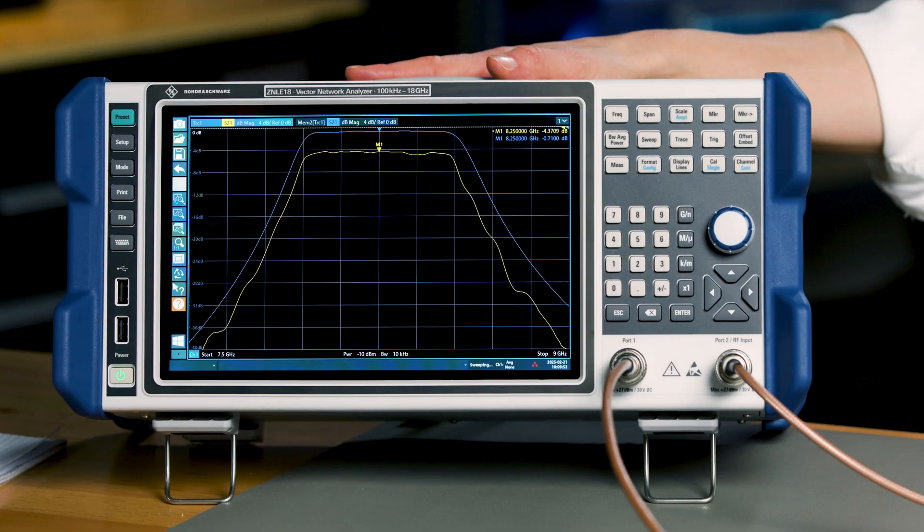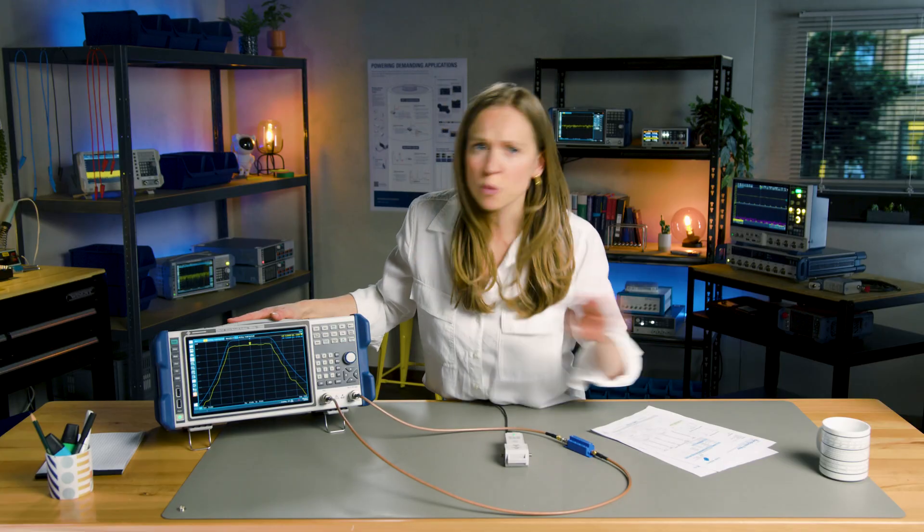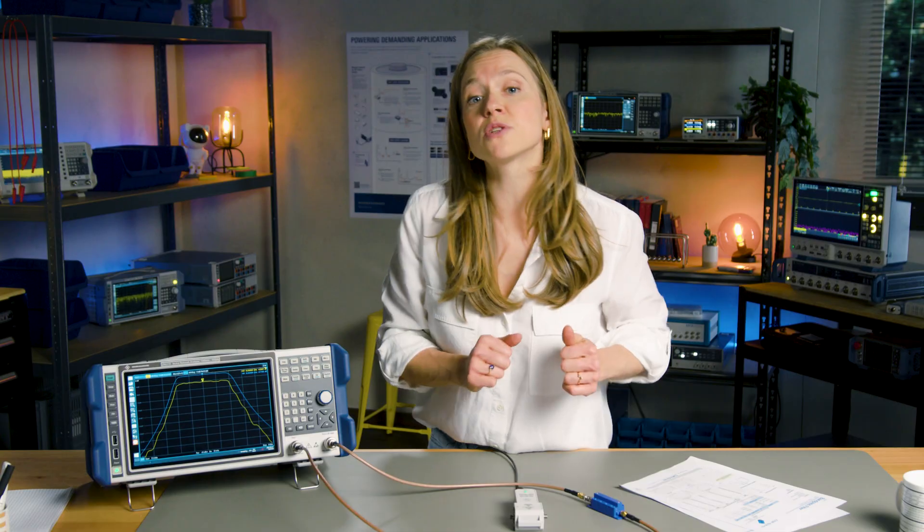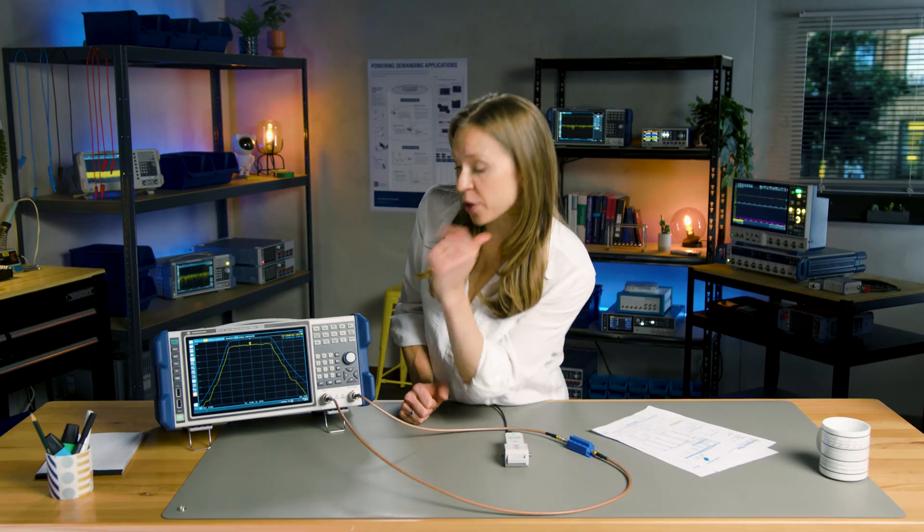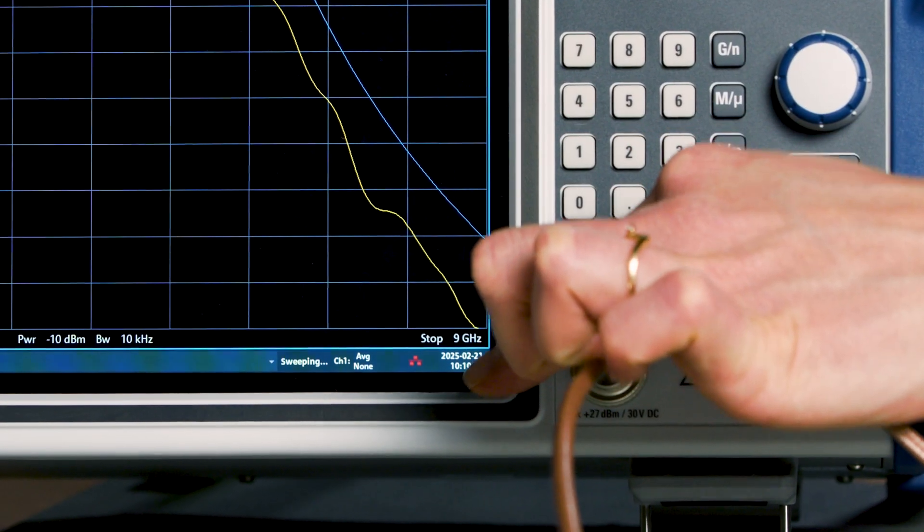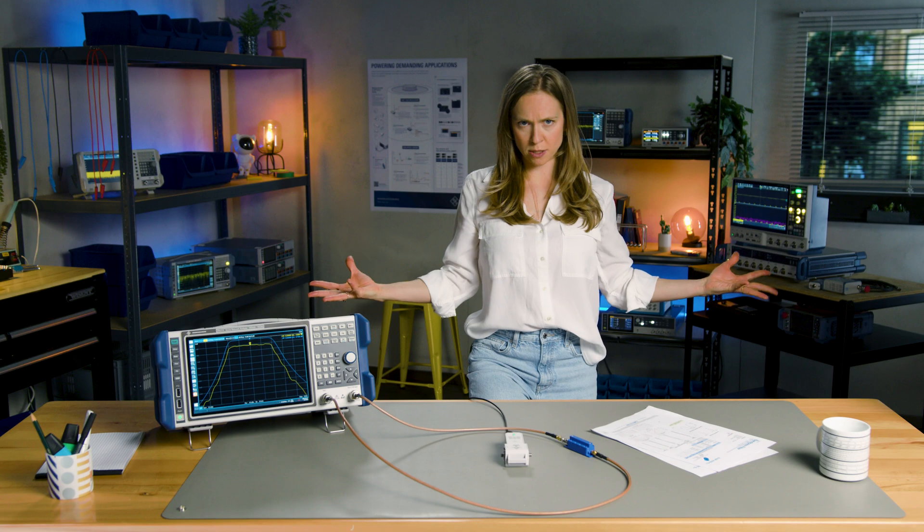Now, let's set up our VNA. For a first quick measurement, we do it without user calibration. We'll come to that point later. We'll begin with a frequency sweep up to 9 GHz to capture the overall response.